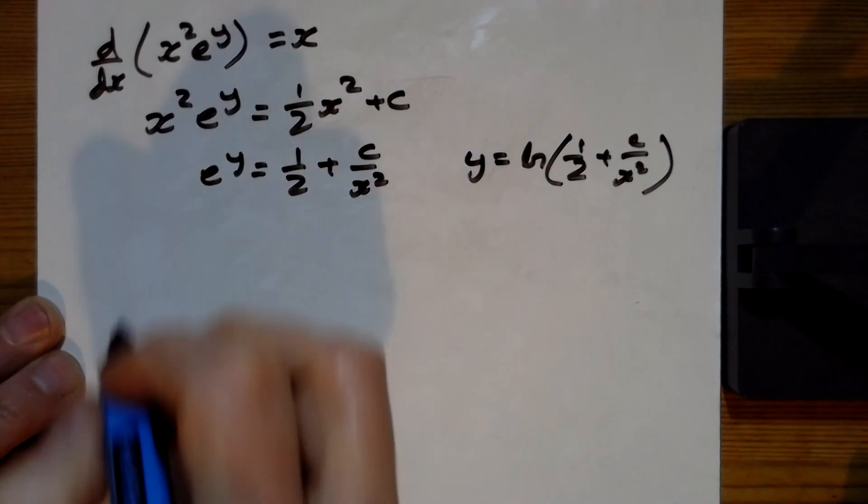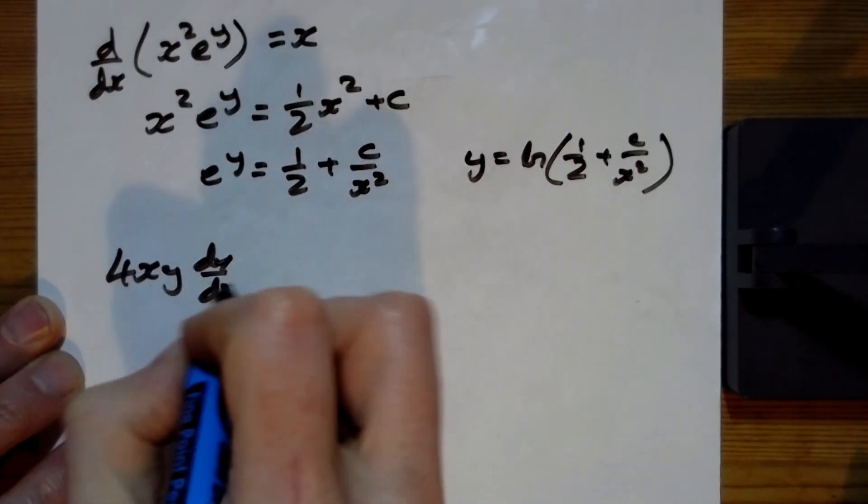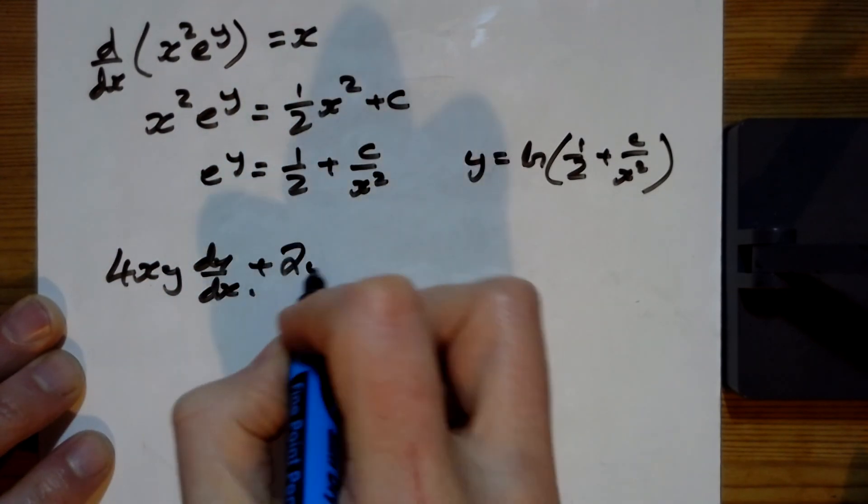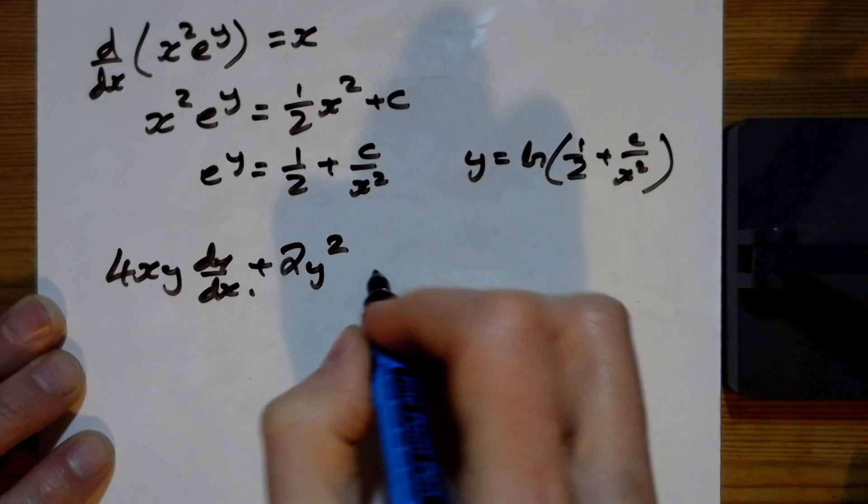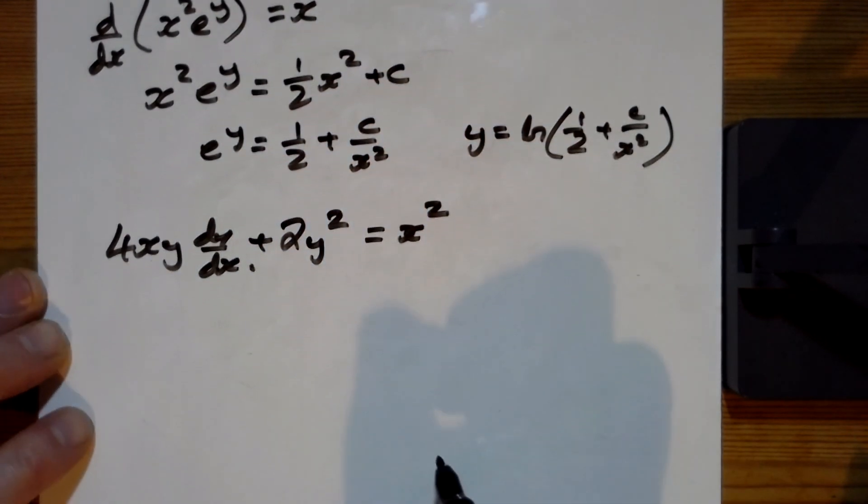And the last one we've got here, we've got 4xy dy by dx plus 2y squared equals x squared. What's that going to be then?